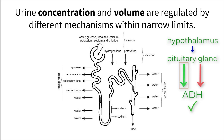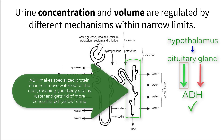This ADH protein travels through the paratubular network and binds to an ADH receptor in the collection duct. A protein mechanism then gets activated that ultimately binds aquaporin protein channels to the membranes on the cells that make up the collection duct, allowing them to be more permeable to water.